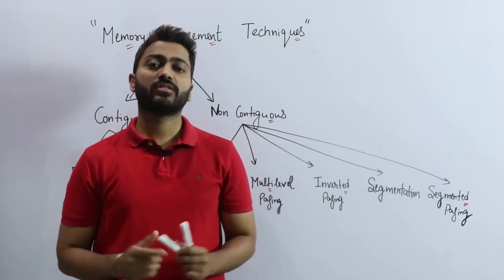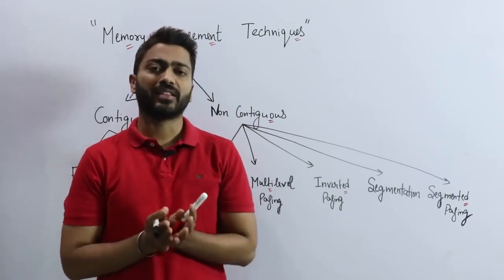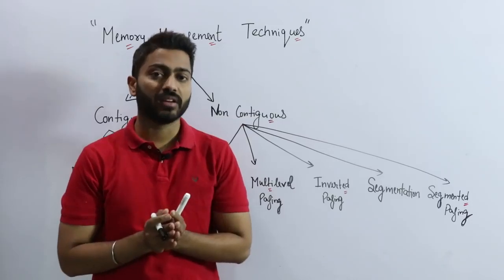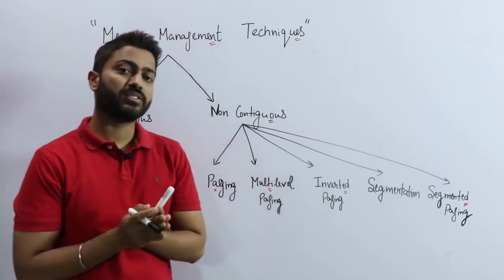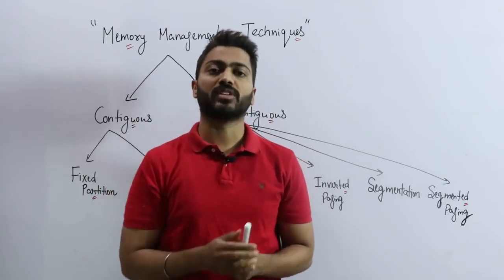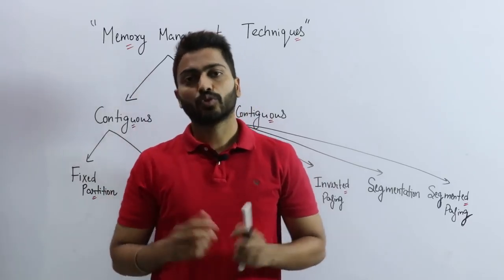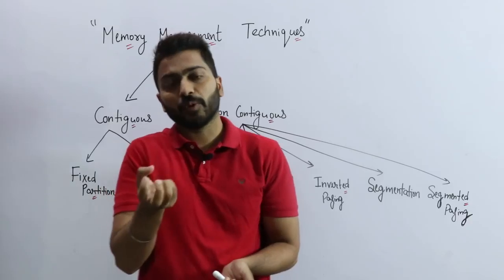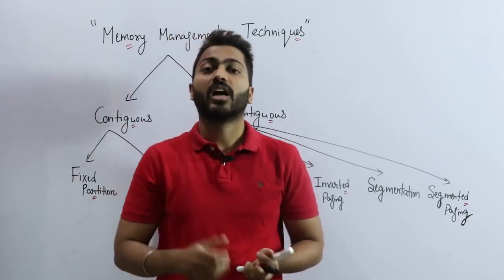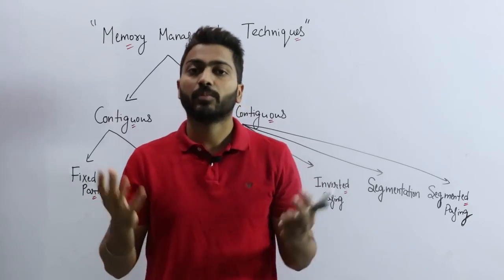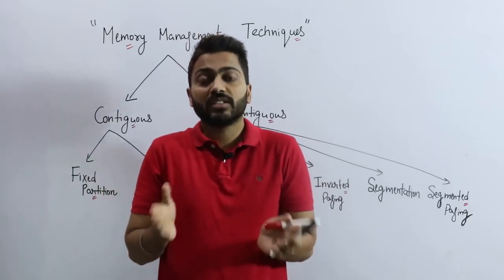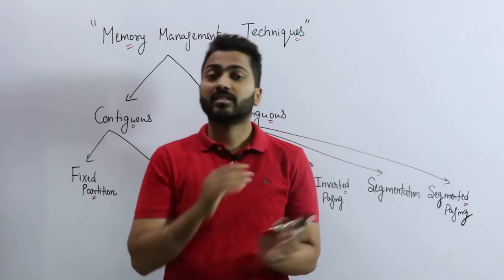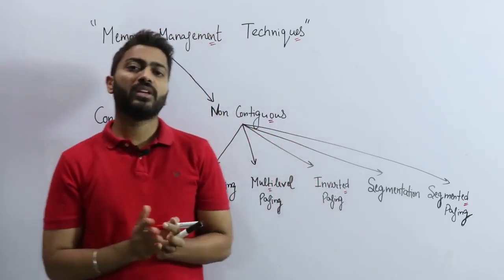Memory Management Techniques: the operating system uses various memory management methods to manage the primary memory, that is RAM. The degree of multi-programming is very important — it says to keep more and more processes in the main memory (RAM), so that whenever the CPU needs a process to execute, there will be plenty of processes available. More processes means a higher degree of multi-programming.